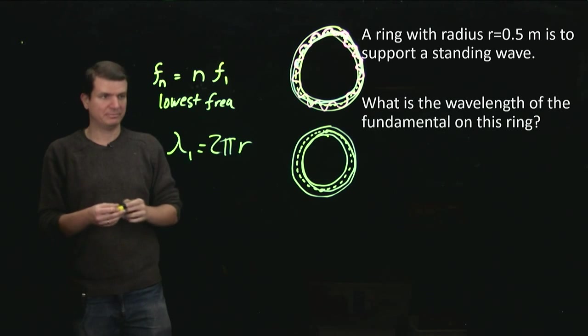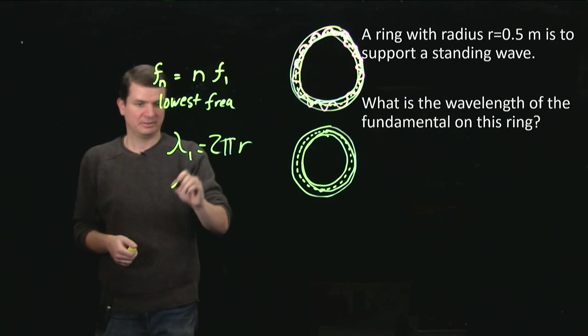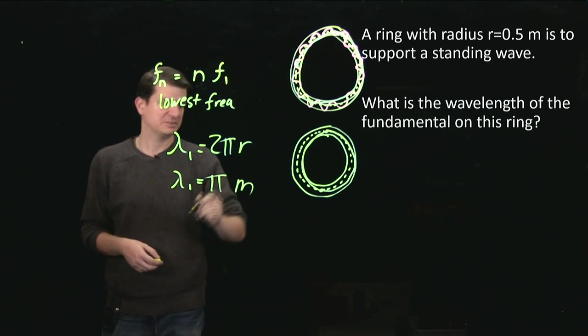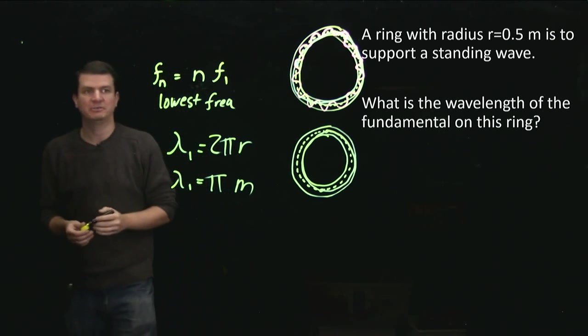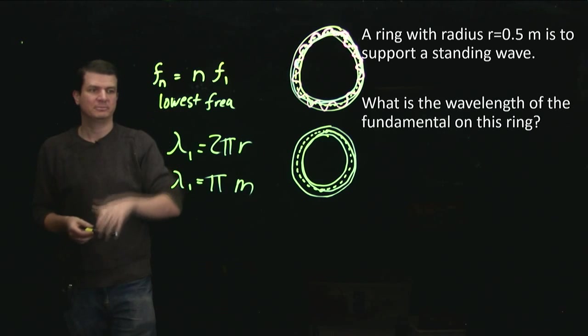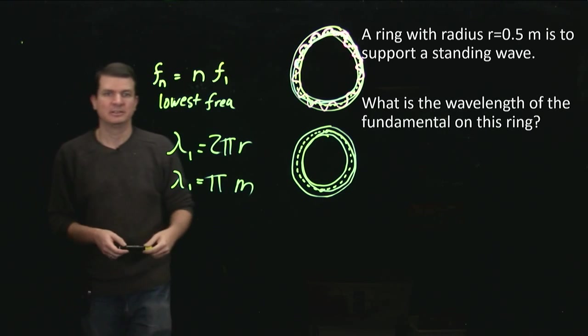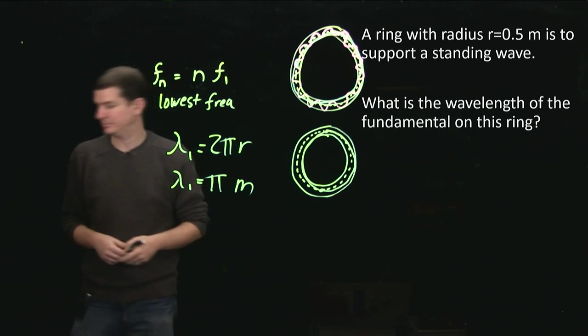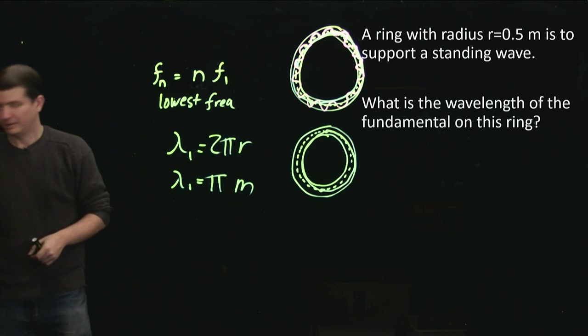And that means that for a radius of a half, lambda one is just π meters. So half meter radius times 2 gives a factor of 1 meter times π. So lambda for the fundamental is π meters.